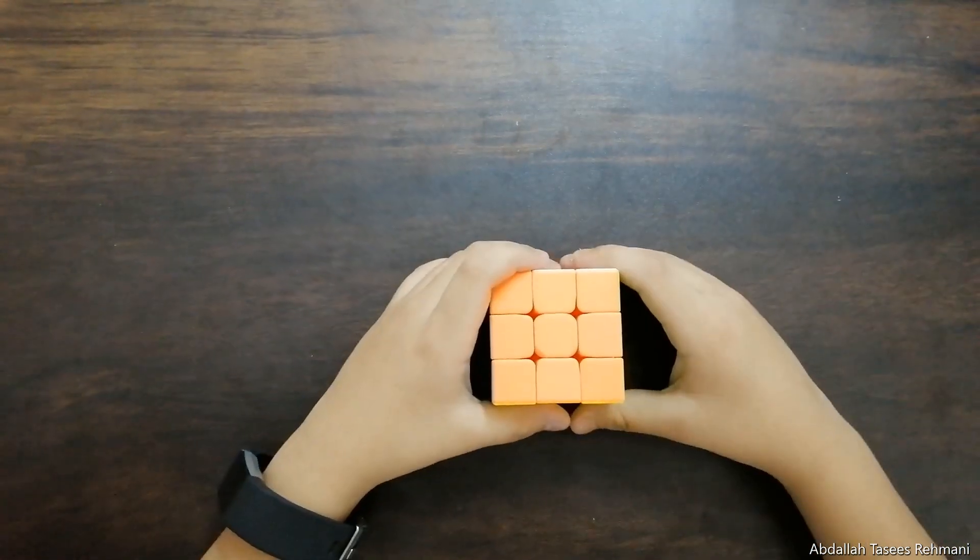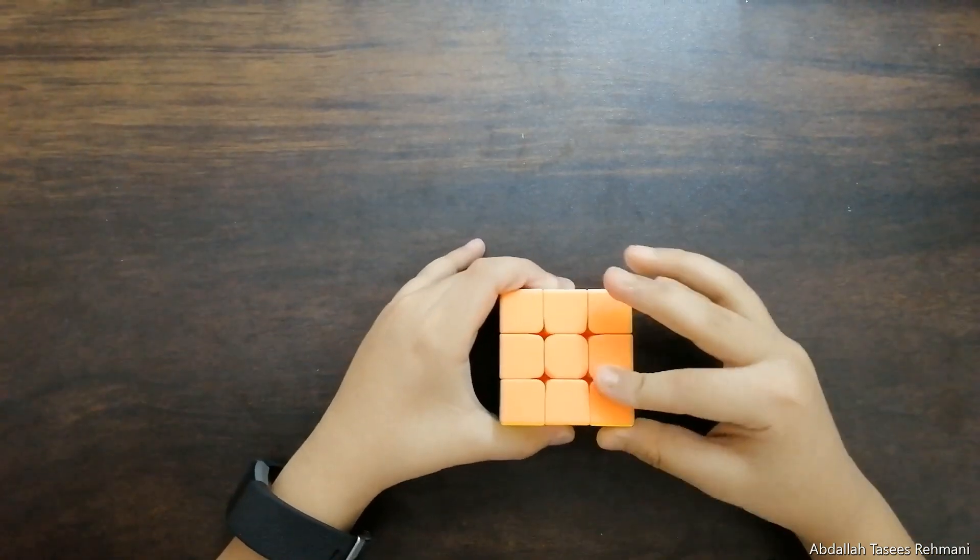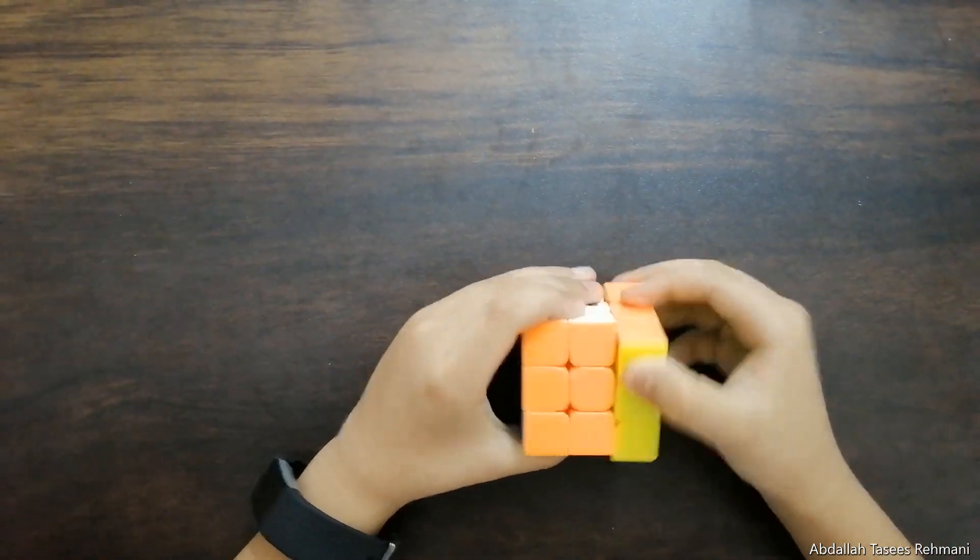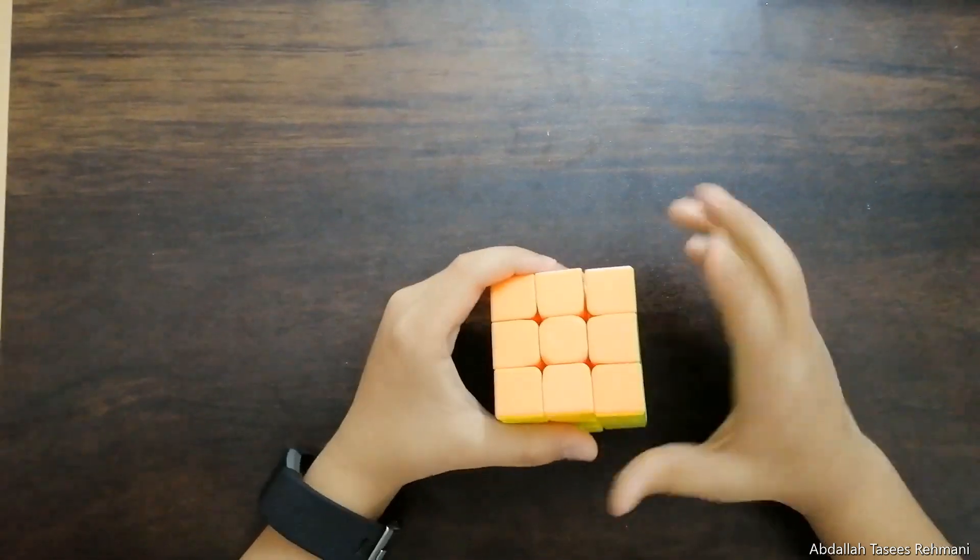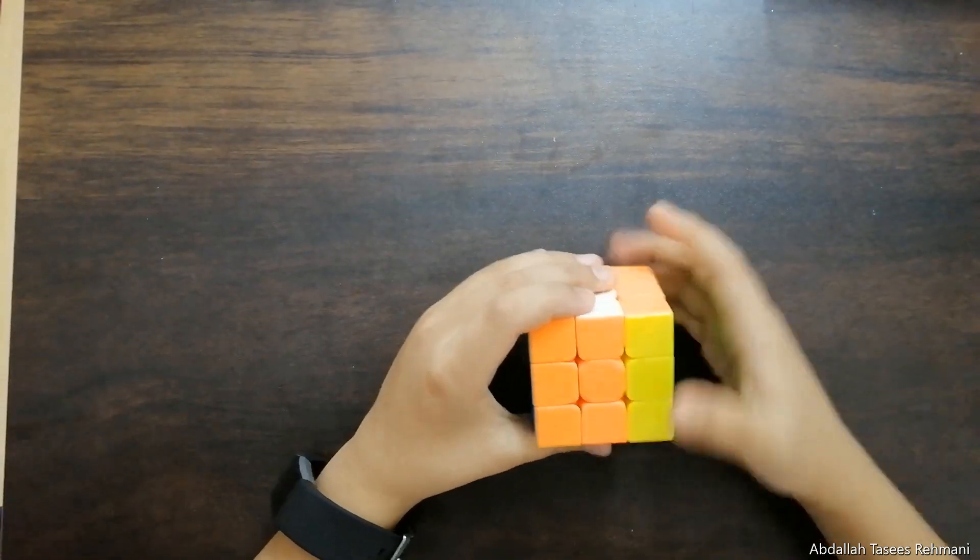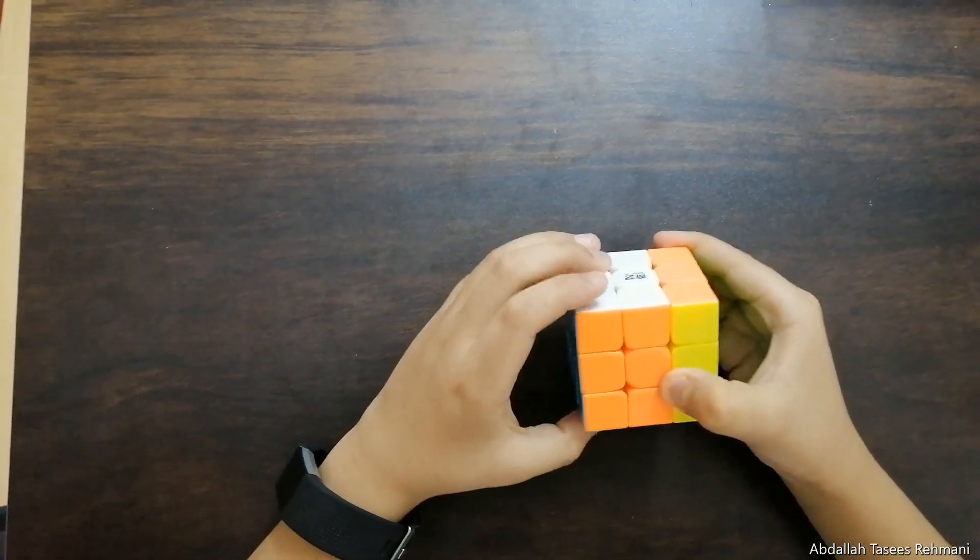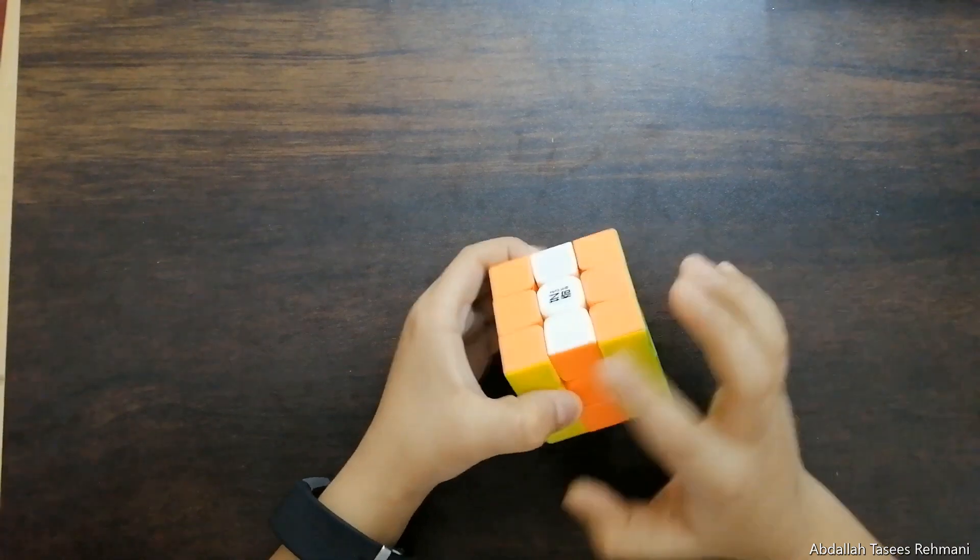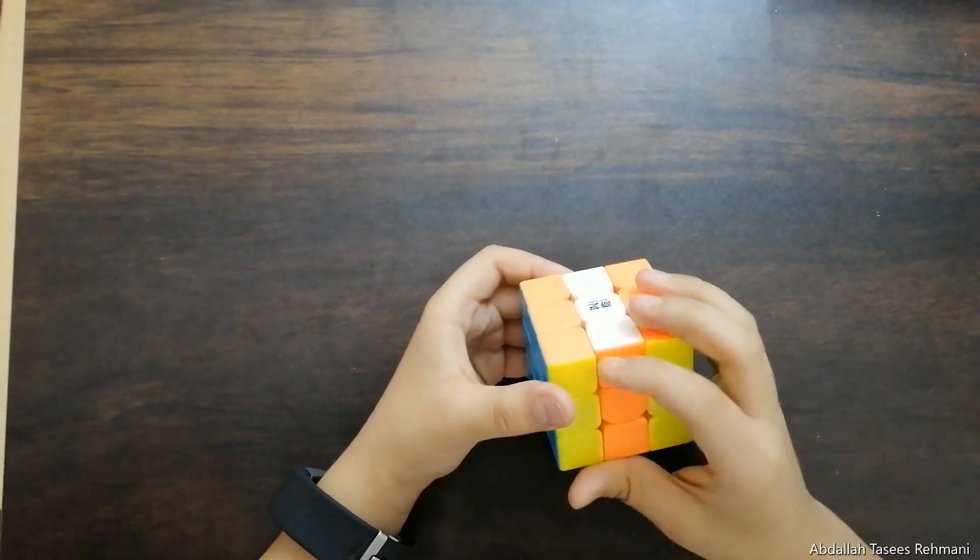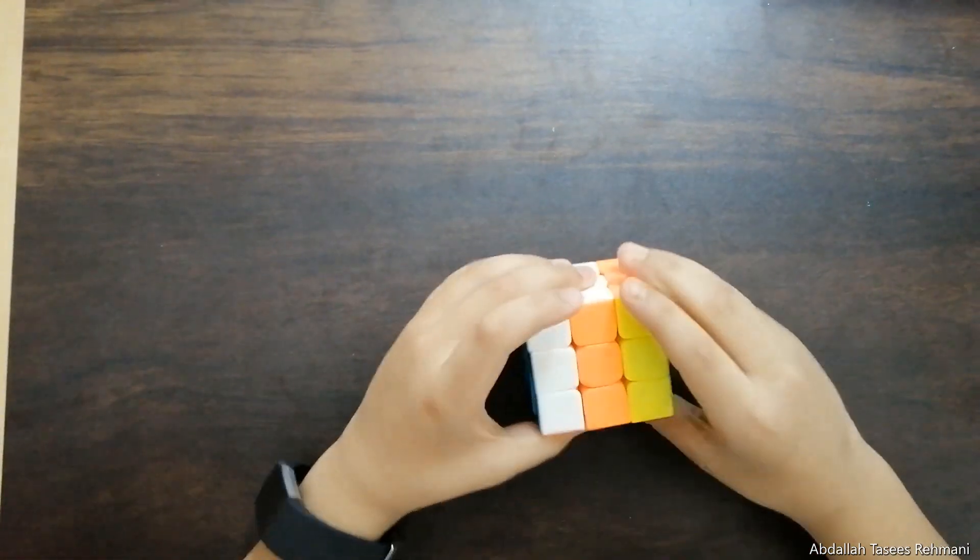We can move this layer up like we do R, or we can probably do R dash. I preferably do R. Then on this side, we should do L dash. We should not have these colors matching. We should not have them like this.